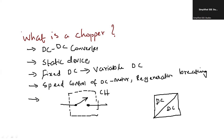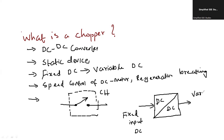In the block diagram you can mark it as DC to DC. On the input side, you write fixed input DC, and on the output side, variable output DC.